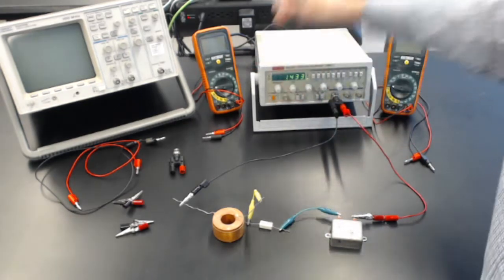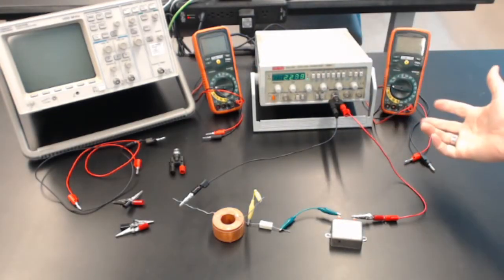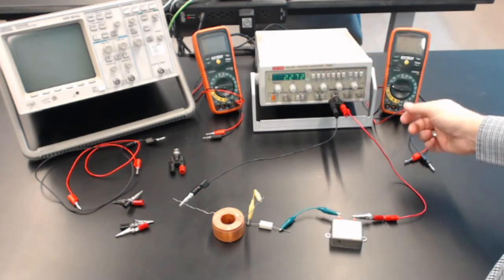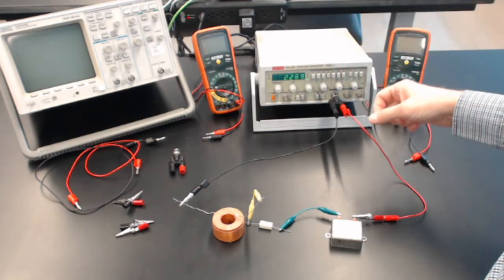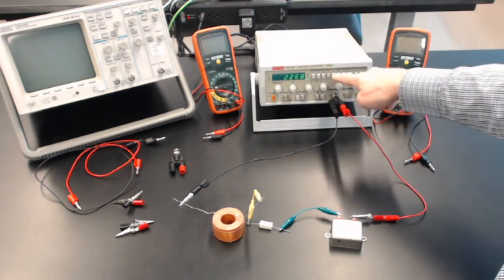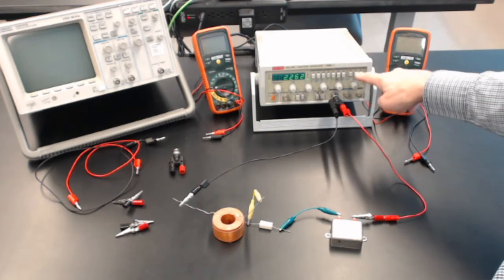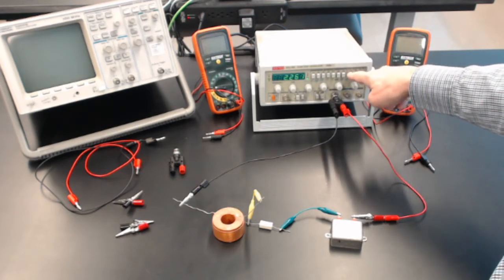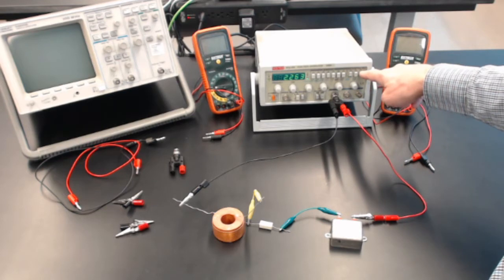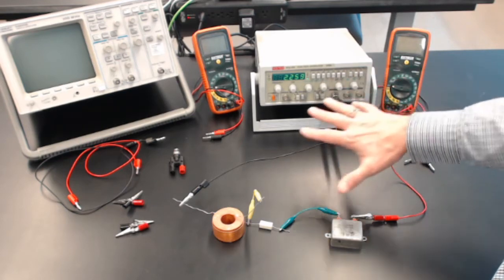And if I turn this on, you can see we're at about 2.27 kilohertz. The range is here, and we can set sine, triangle wave, or square wave here, and the output's going. So this is working.